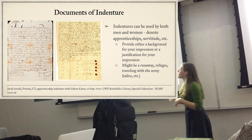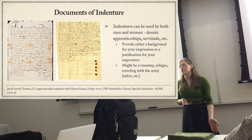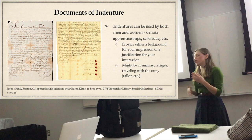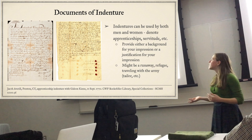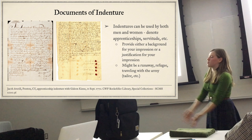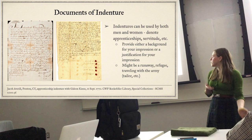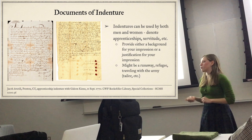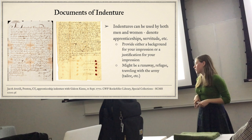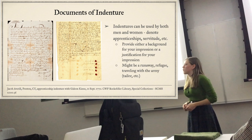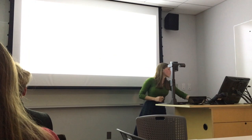There are also documents of indenture that can relate to a trade. These can be used by both men and women, white and Black, to denote apprenticeships, servitude, and sometimes enslavement. They can also document owing somebody money or land. They can provide a background or justification for your impression - like 'this is my indenture, this means I'm a servant.' You might be a runaway, a refugee, or traveling with the army. There are records of both men and women who were tradespeople traveling with the British and Continental armies, and some runaway ads show people running away from their apprenticeships to join the army.